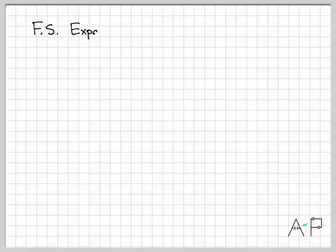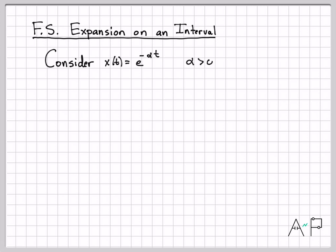All right, let's take a look at a Fourier series problem. In this particular problem, we are going to find the Fourier series of a continuous time signal on an interval. Usually we think of using the Fourier series to represent a periodic continuous time signal for all time, and that's what it typically does.